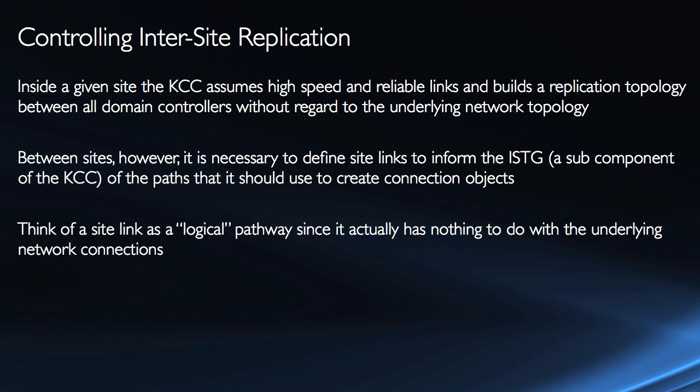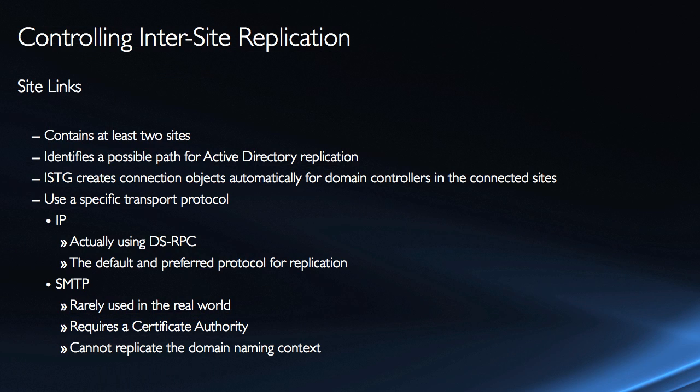Between sites, however, it's necessary to define site links, because the site links are going to help inform the ISTG of the paths it should use to create connection objects. We can think of the site link as a logical pathway — it doesn't correspond directly to the actual underlying network connections, but it is our representation of those connections. For example, you could have one site link and have a primary T1 line between two sites and a secondary DSL modem with a VPN connection. Site links do need to be created. There is one site link by default, called the default IP site link, and it is connected to the default first site name.